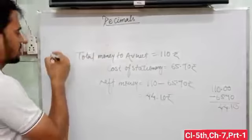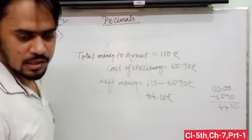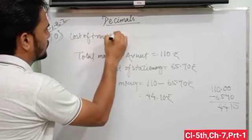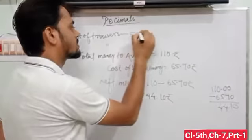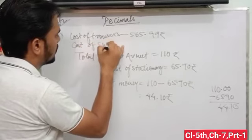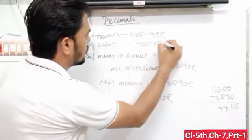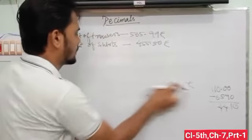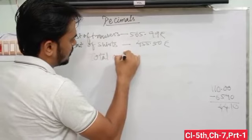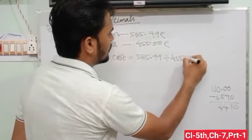The question is question number 10 from exercise 8.2. The cost of trousers is 565.99 and the cost of shirts is 455.50 rupees. We have to find out total cost. Total cost equals 565.99 plus 455.50 rupees.